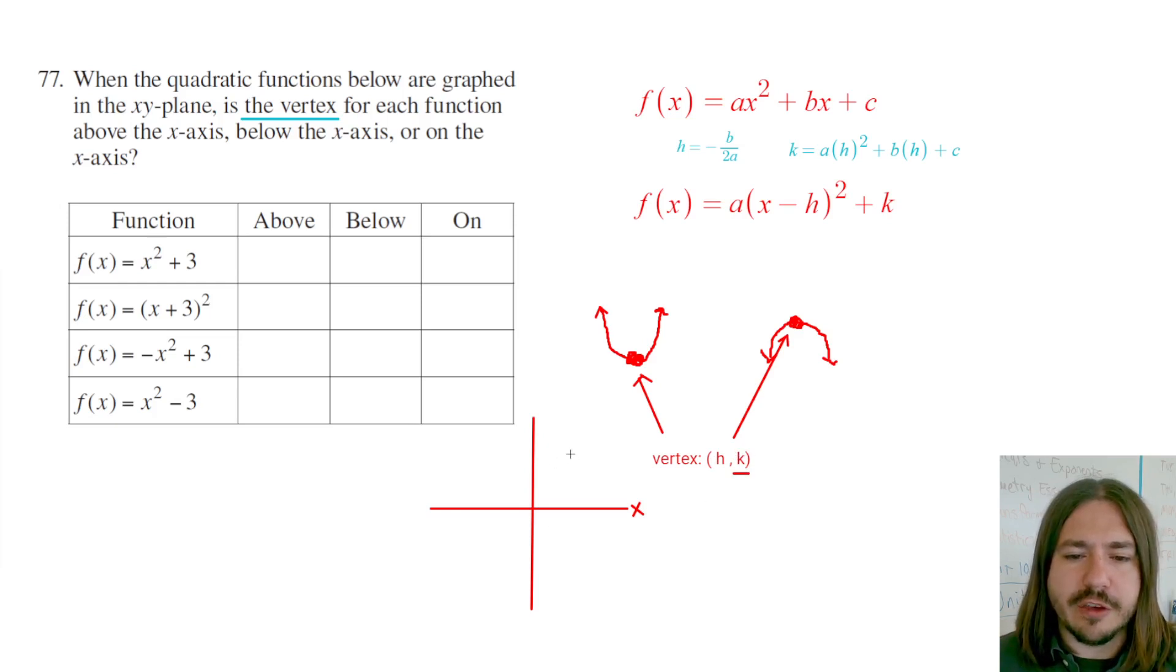So what we really are interested in is whether or not this k value is positive or negative. If the k value is positive, it's going to be above the x-axis. But if the k value is negative, then it'll be below the x-axis.